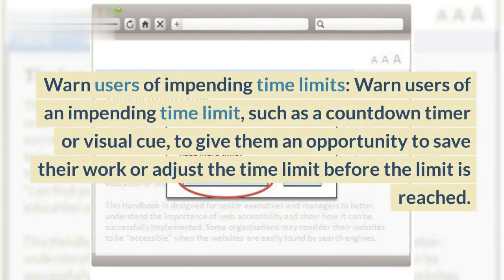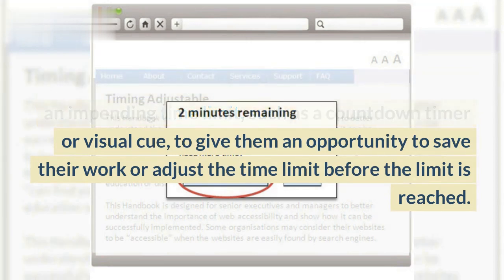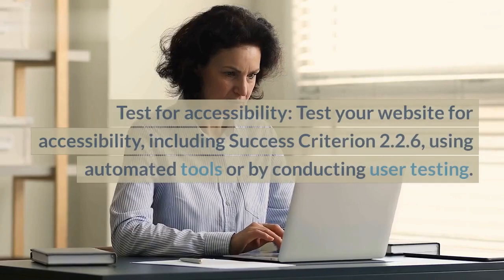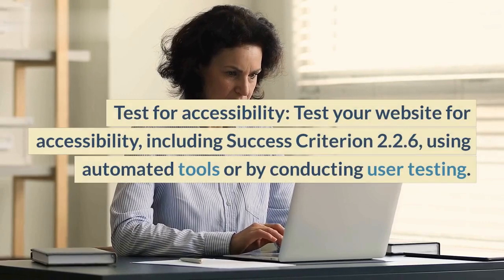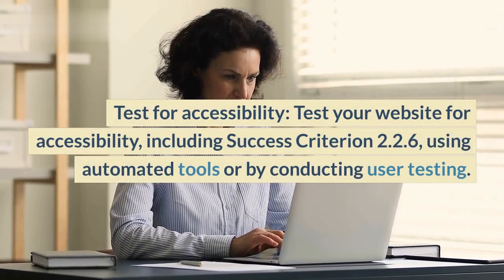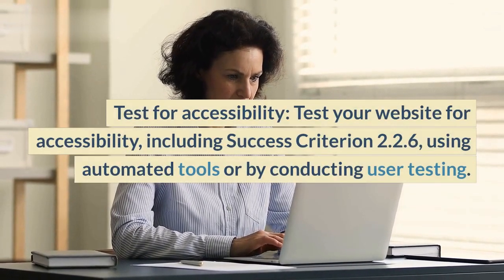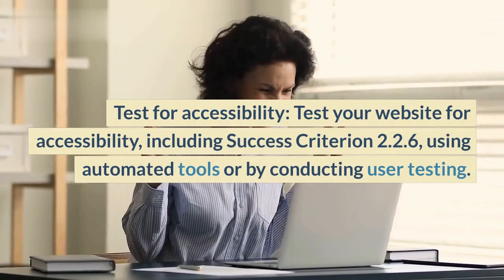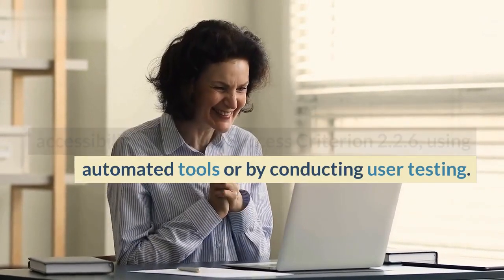Warn users of impending time limits, such as a countdown timer or visual cue, to give them an opportunity to save their work or adjust the time limit before the limit is reached. Test your website for accessibility, including Success Criterion 2.2.6, using automated tools or by conducting user testing.